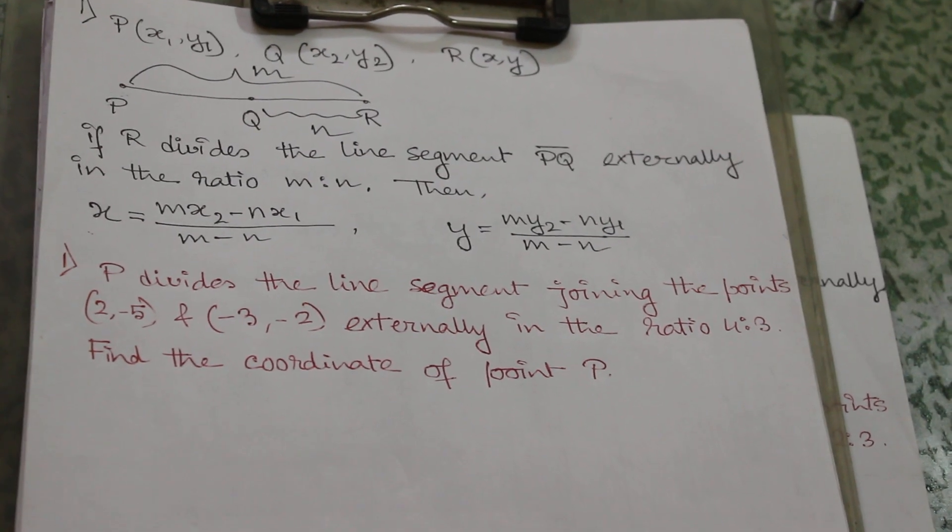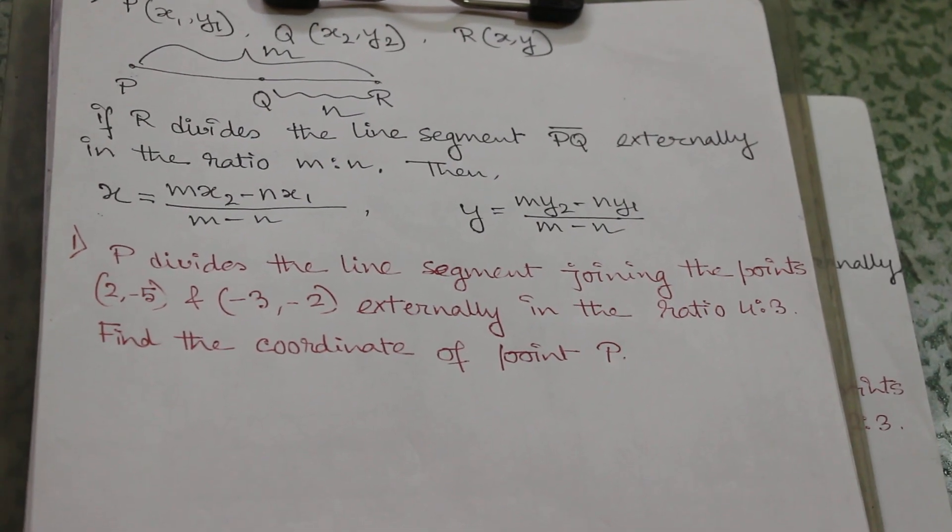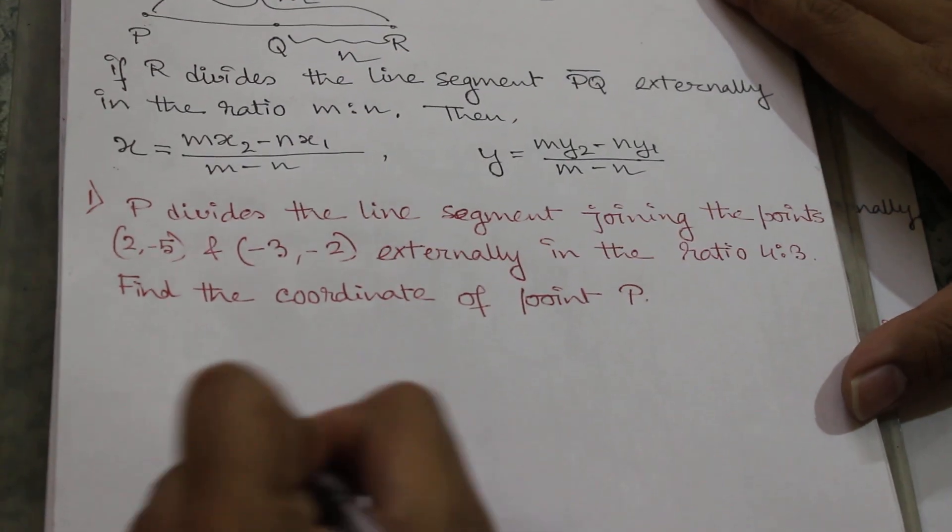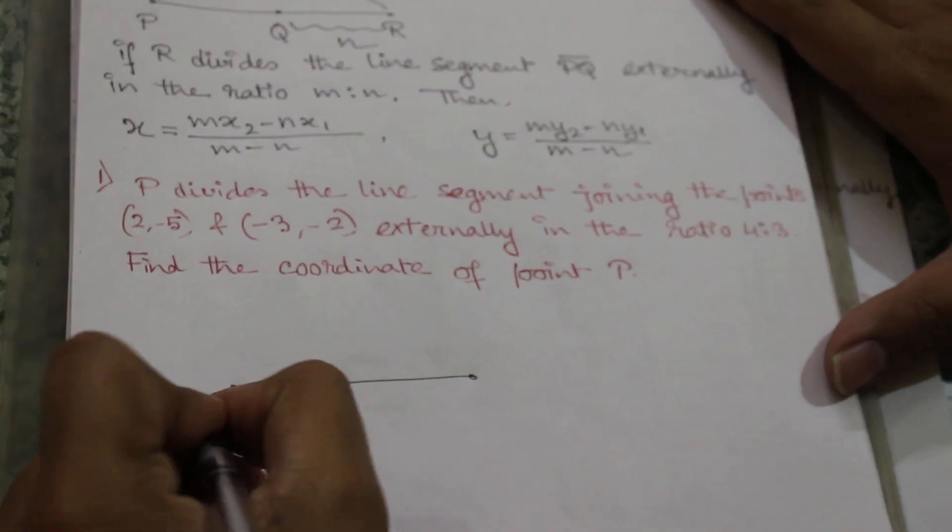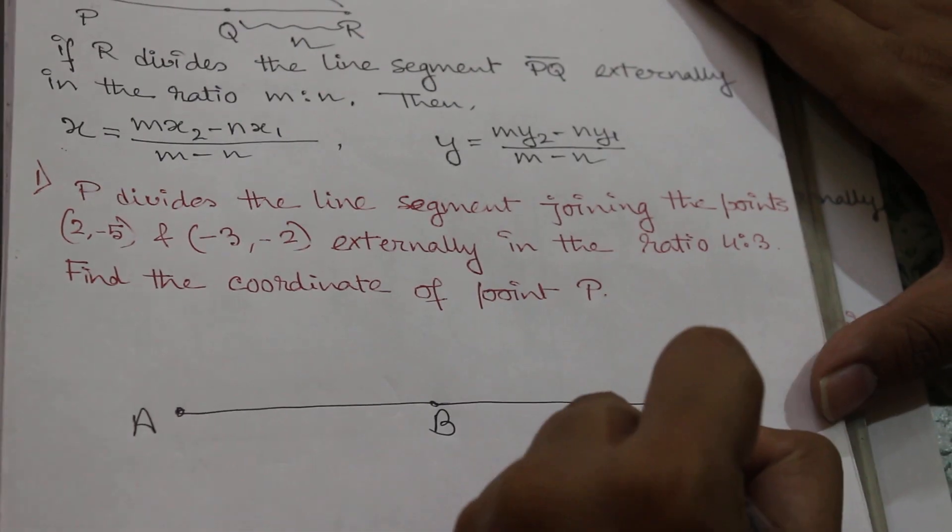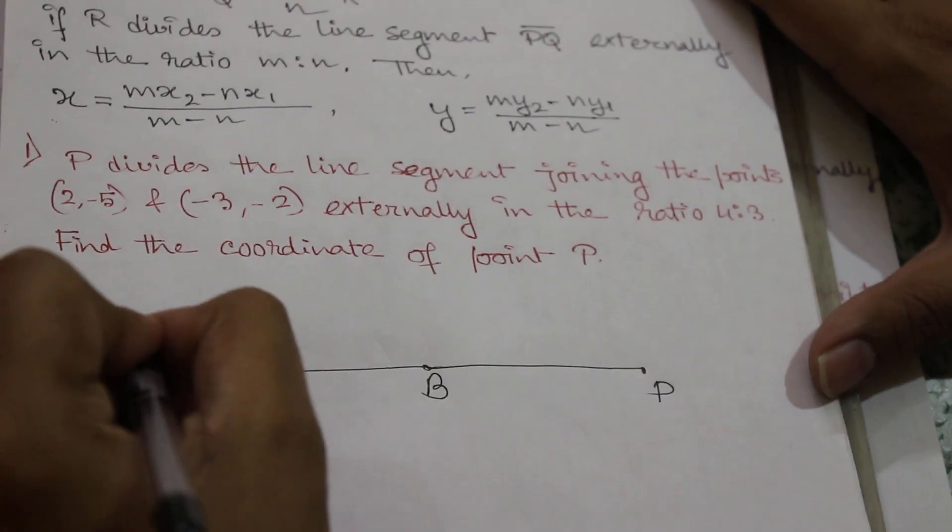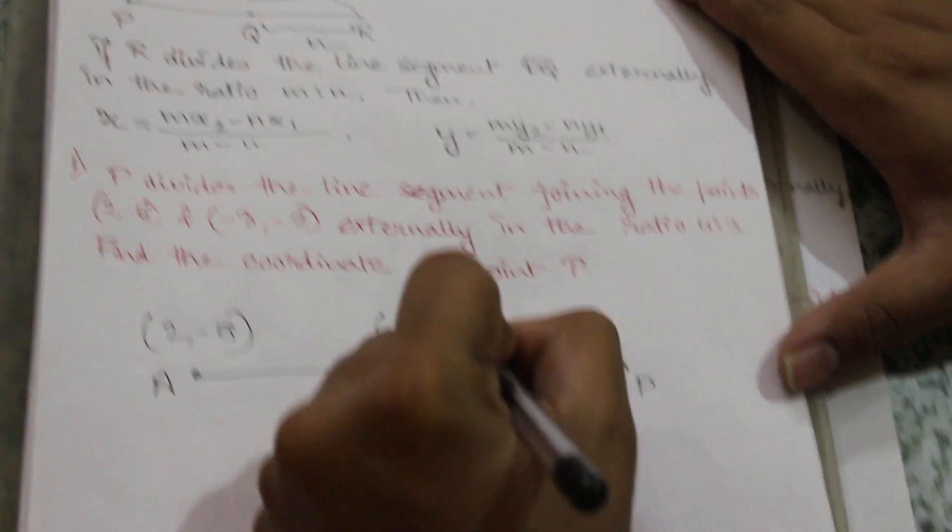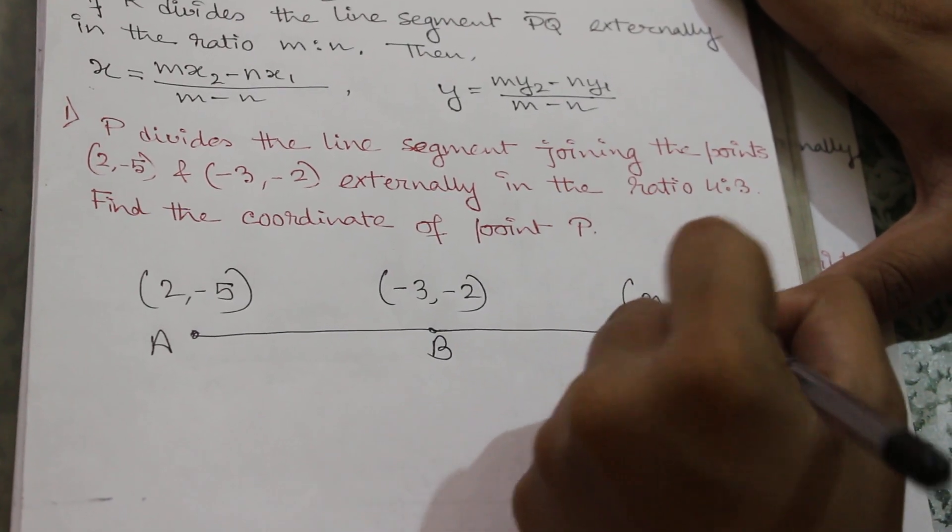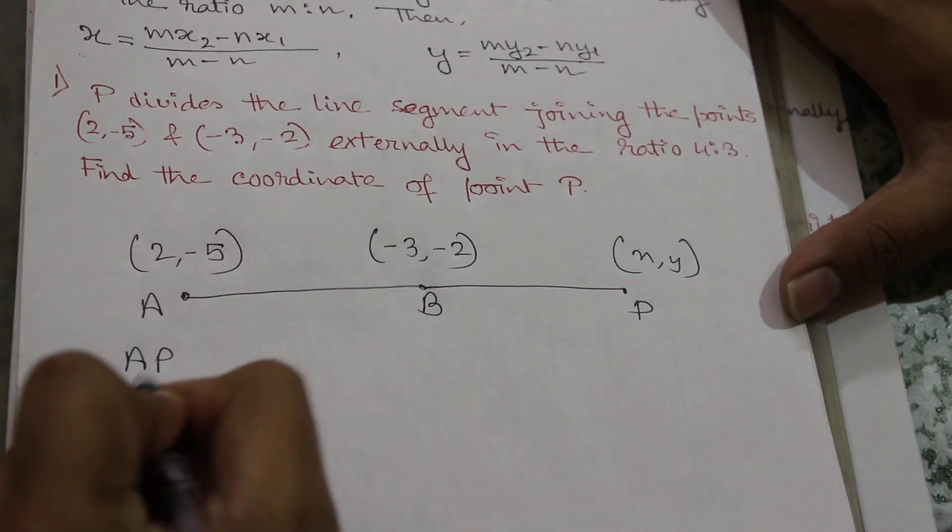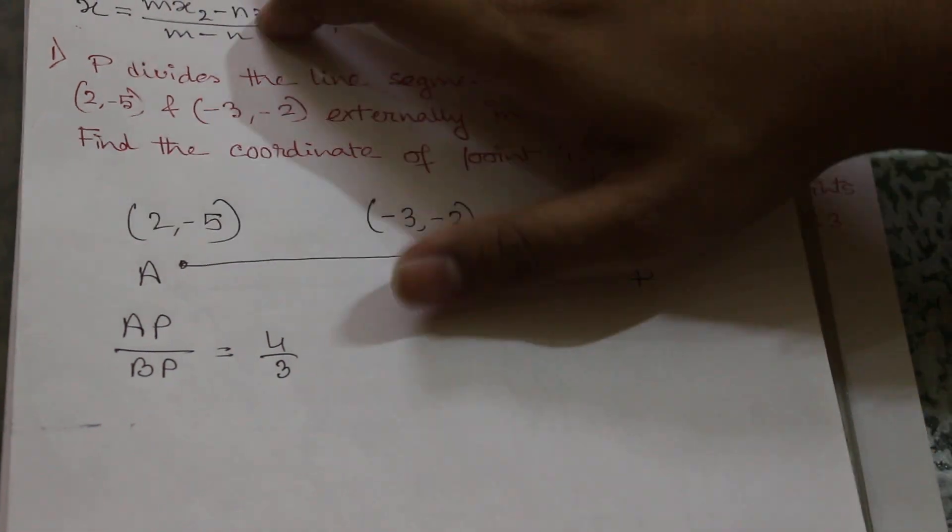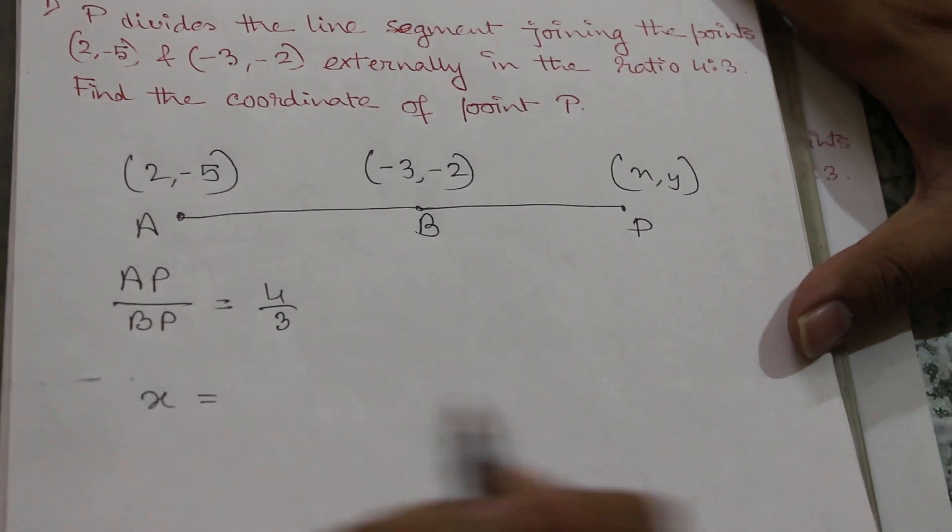So first we will draw: this is point A, this is point B, and this is point P. So it is (2,-5), this is (-3,-2), and this is (x,y). So as per question, AP by BP equals 4 by 3. So we will use this formula: x will be equal to